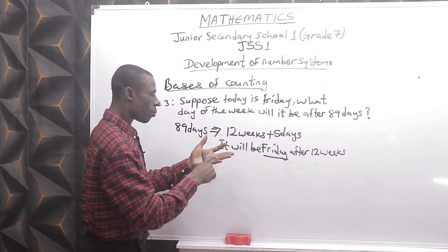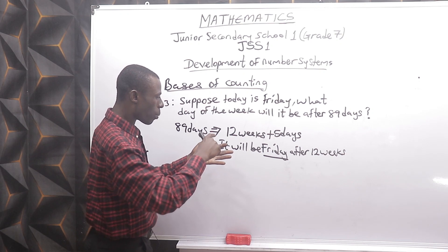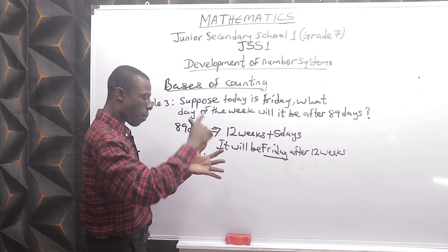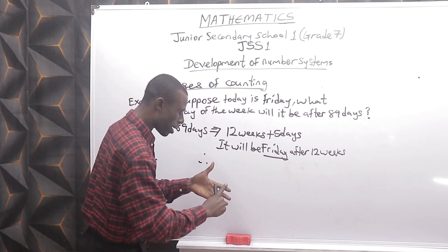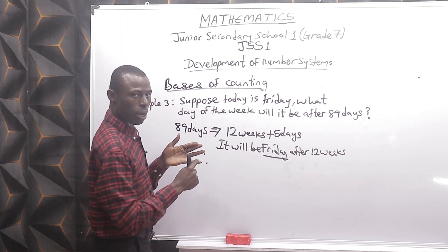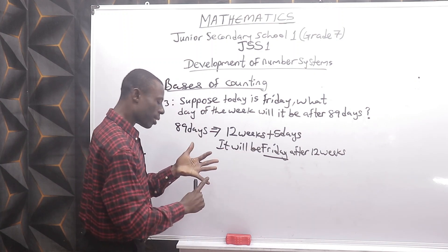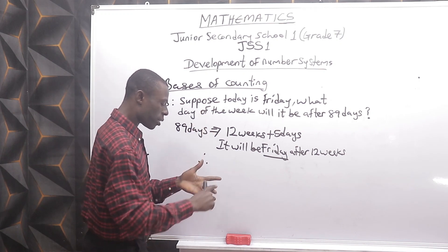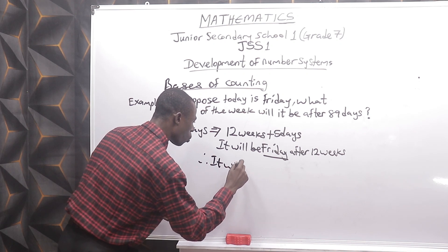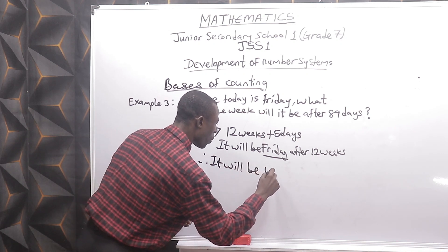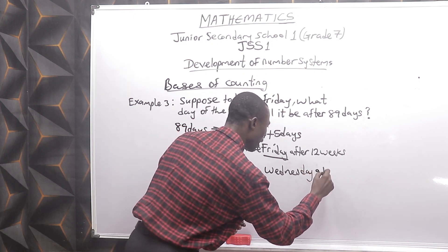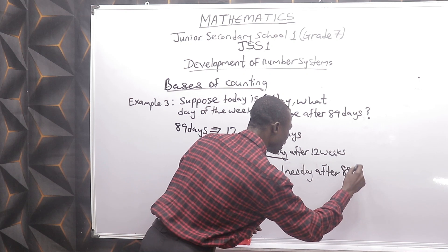Starting from Friday of the 12th week, count 5 days forward: Saturday, Sunday, Monday, Tuesday, Wednesday. Therefore it will be Wednesday after 89 days.